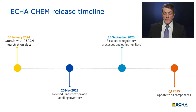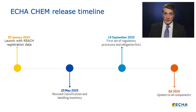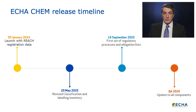EkaChem went live in January 2024 and now on the 20th of May 2025, we are releasing the second major data set, the redesigned CNL Inventory. Later this year in September, we will release the first set of regulatory lists and obligations, as well as having, later on in the year, enhancements to all published data streams.